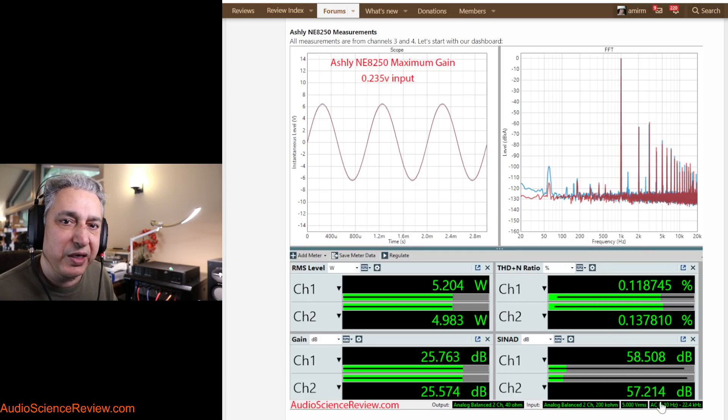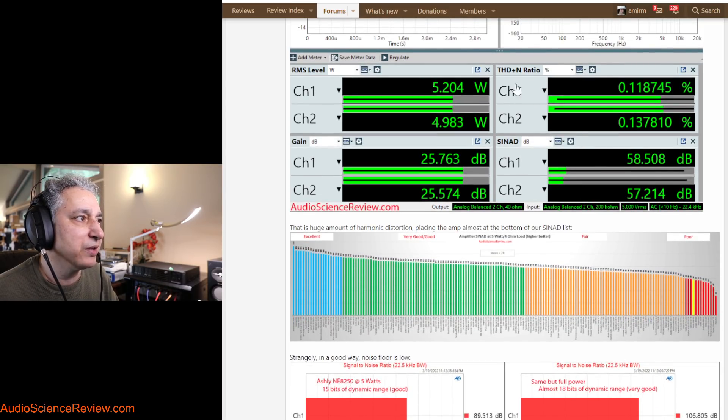And that sets our SINAD, which is the sum of noise and distortion relative to our signal. This is quite poor. If you look at all the amplifiers that I've tested, which I think is like 170 amplifiers in the last three years, it lands squarely in the red section, which is quite poor.